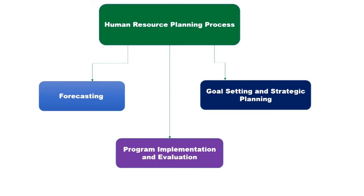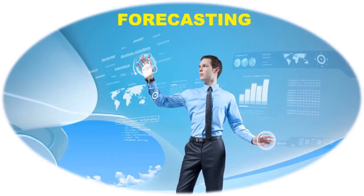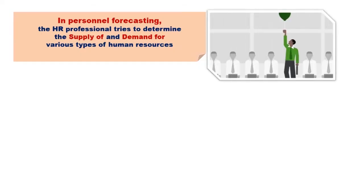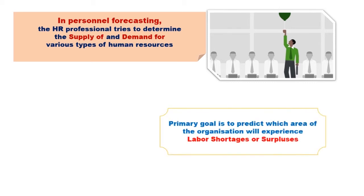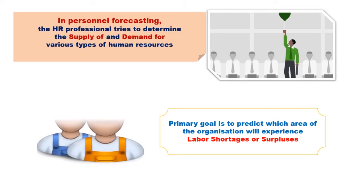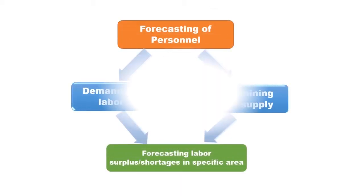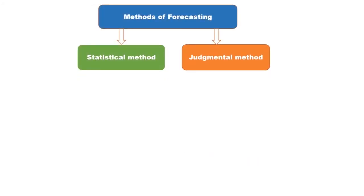Beginning with the first step in human resource planning, that is forecasting. In personnel forecasting, the HR professional tries to determine the supply of and demand for various types of human resources. The primary goal is to predict which area of the organisation will experience labour shortages or surpluses. Forecasting supply and demand can use statistical methods or judgements.